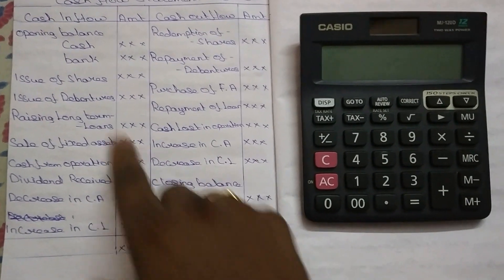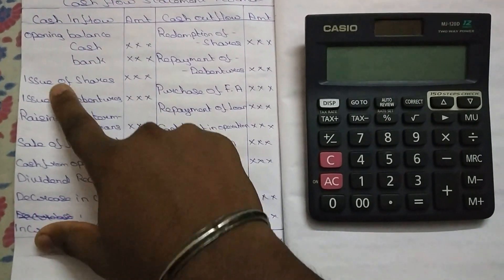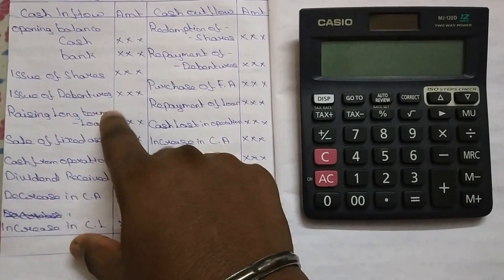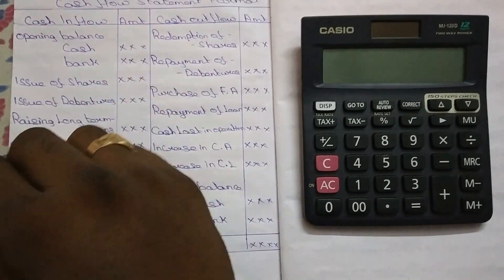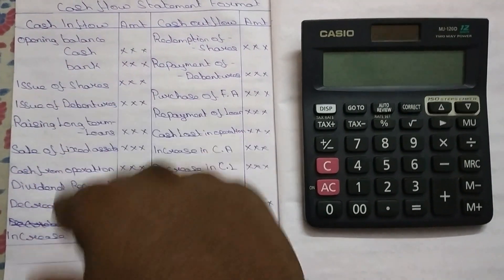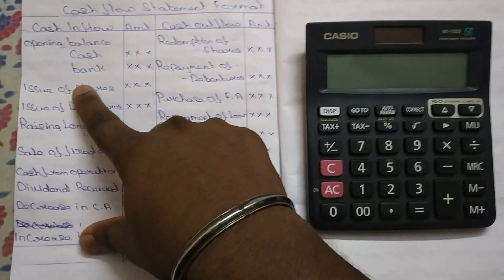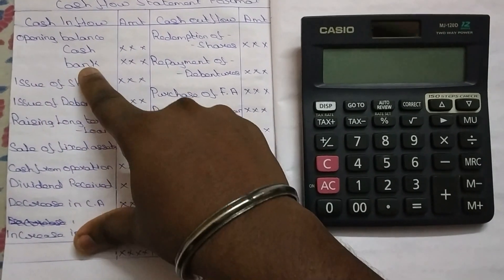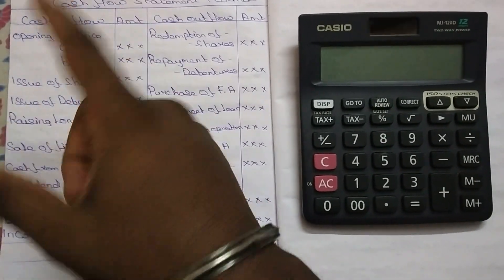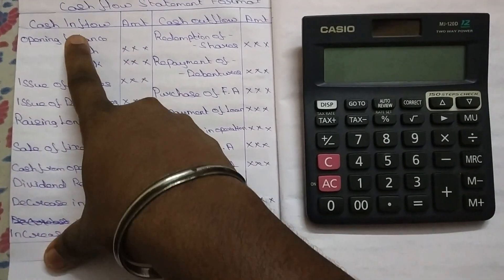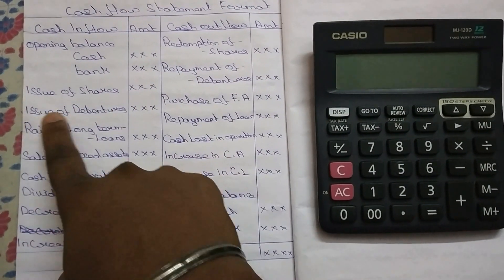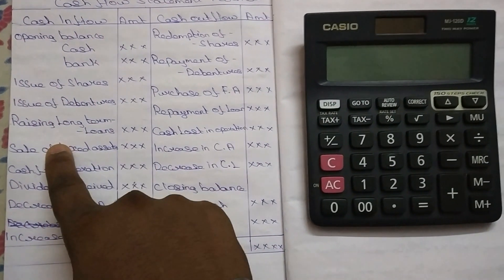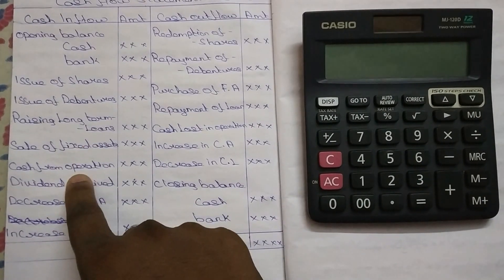As cash and bank, that is the issue of shares — shares issue is a cash inflow. That is the issue of debentures — cash inflow. Long-term loans are also a cash inflow.